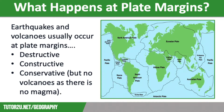Earthquakes and volcanoes do not occur randomly across the globe. The majority of them occur at plate margins. There are three plate margins that you need to know as part of the GCSE course.